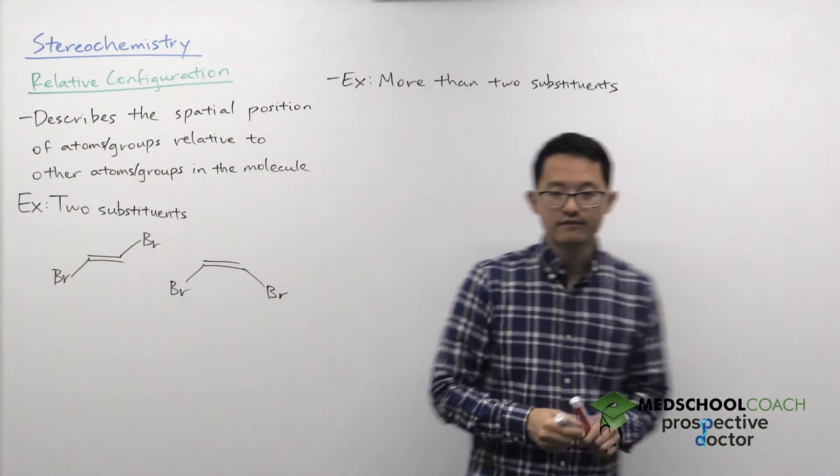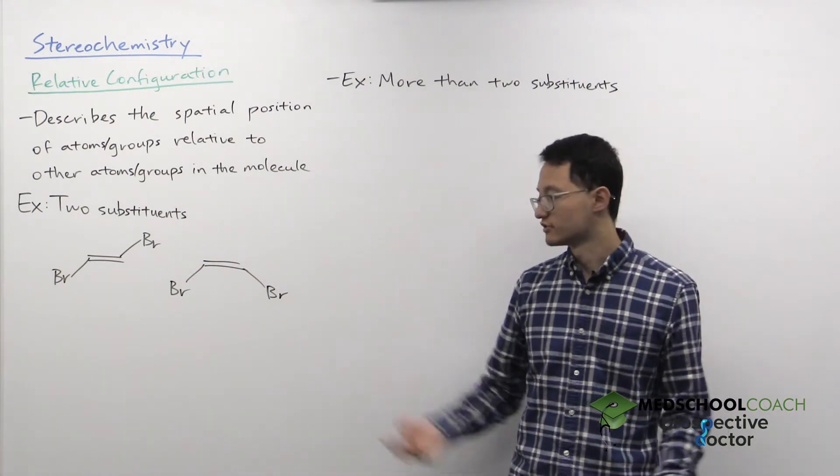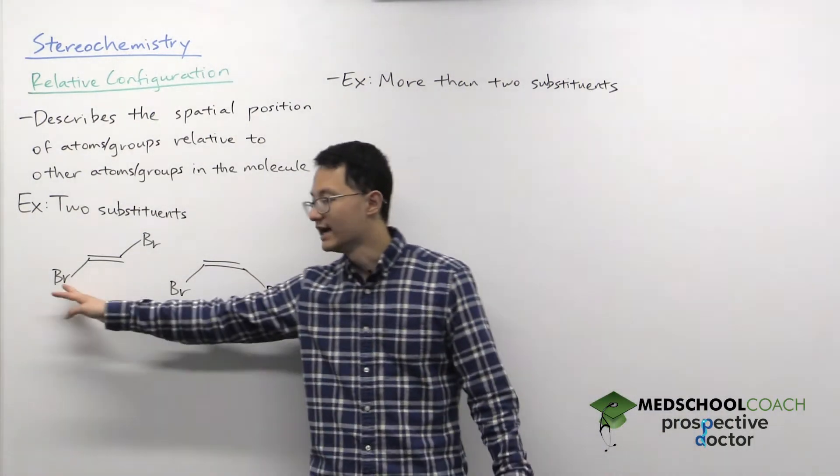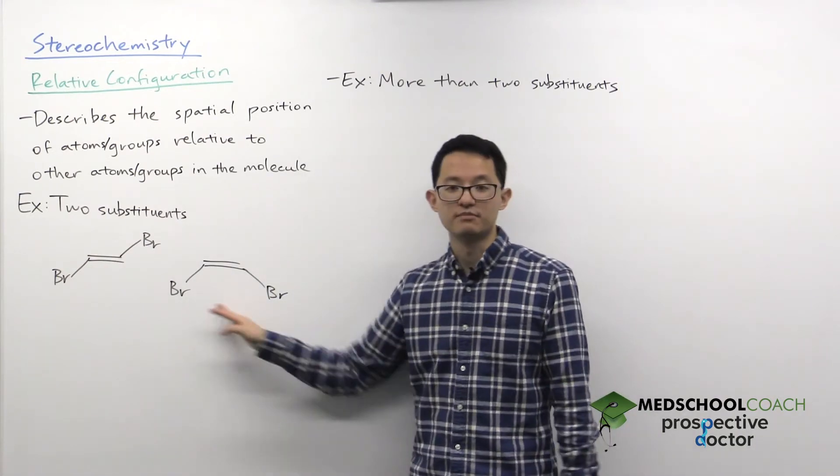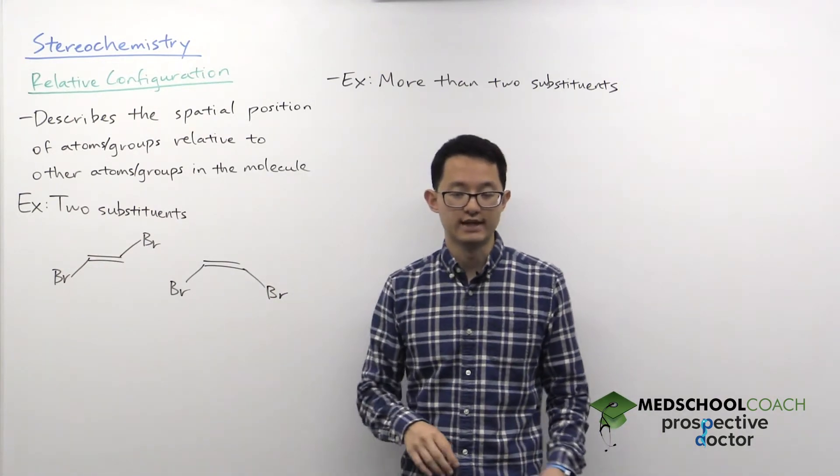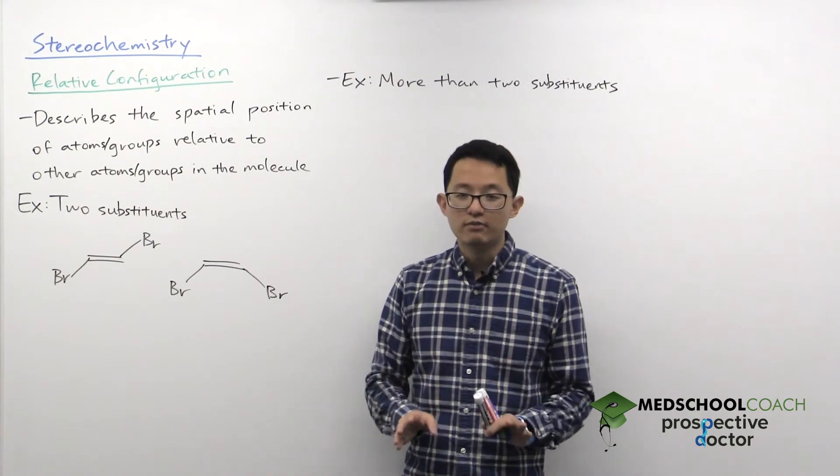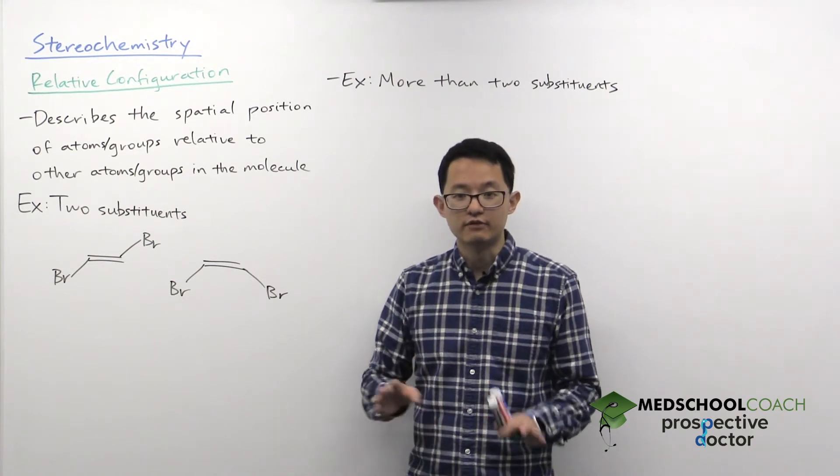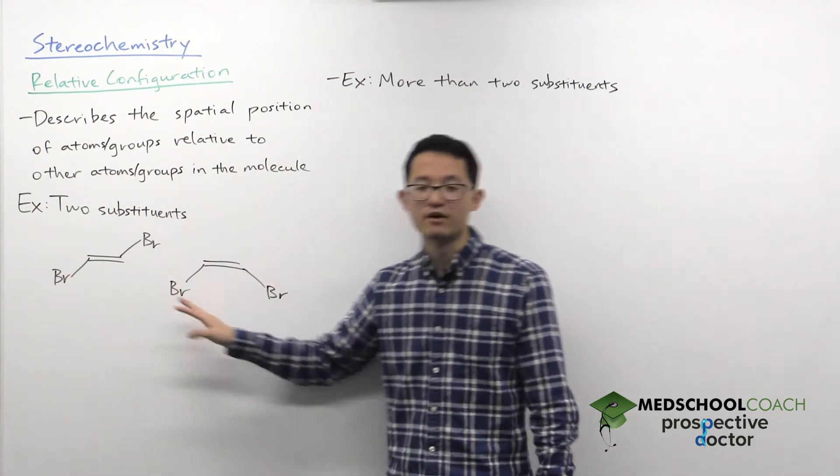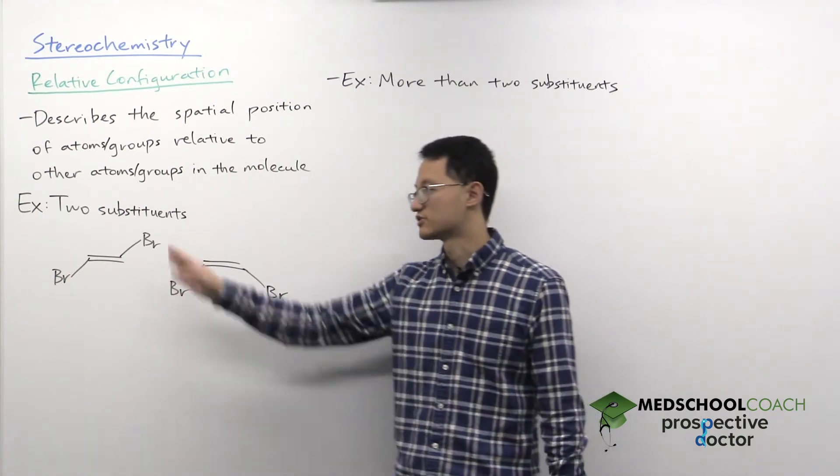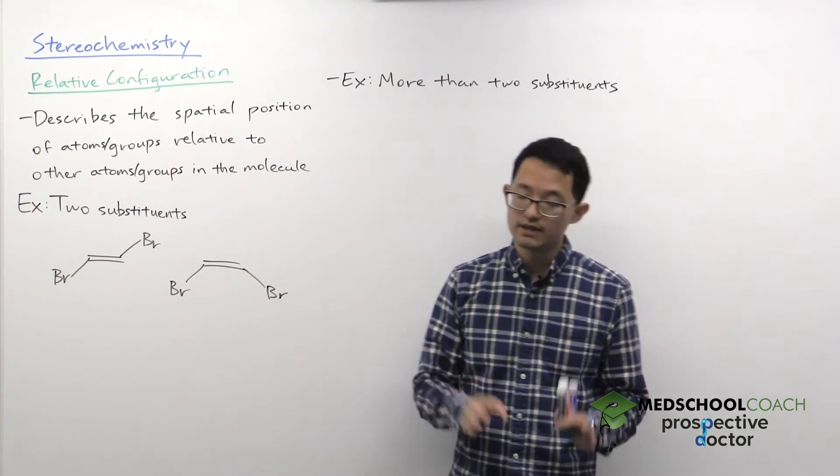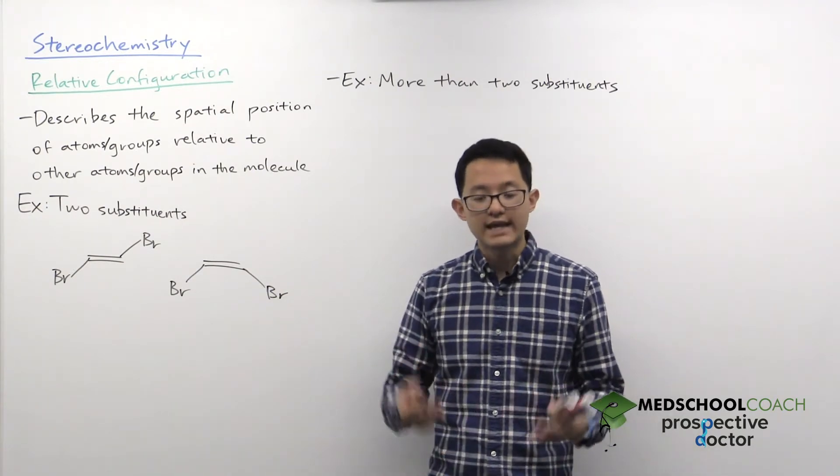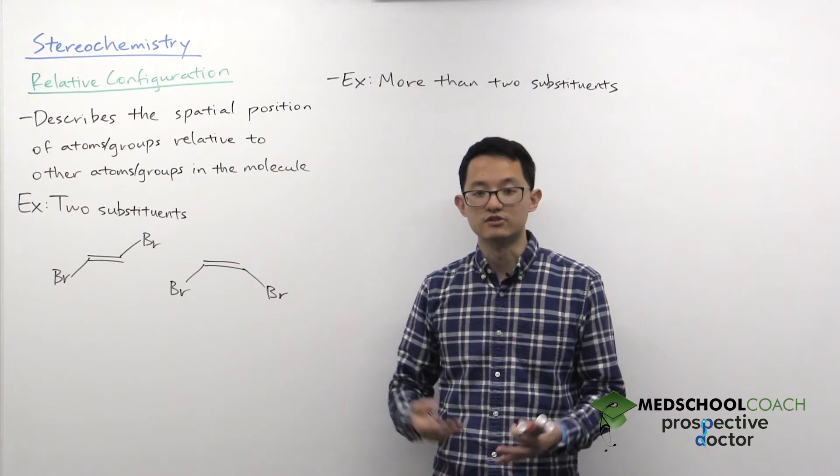So what you can see is you have two very similar looking molecules. The only difference is that in one case the bromines are on the opposite side of the double bond and in the other case the bromines are on the same side of the double bond. Remember, double bonds do not exhibit free rotation. So these are different molecules. You cannot just rotate a bromine to the bottom and say they're the same. So because they are different molecules, we can assign a relative configuration to them.